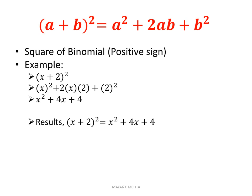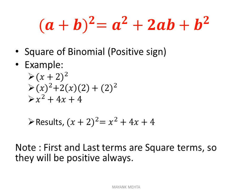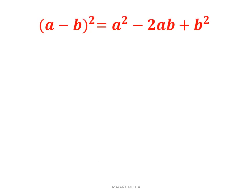So the first term squared is x², then a positive sign, then 2 times the first term times the second term — that means 2 × x × 2 — and then plus the second term squared, that means 2². So the answer will be x² + 4x + 4. Keep in mind that the first and last terms are square terms, so they will always be positive.